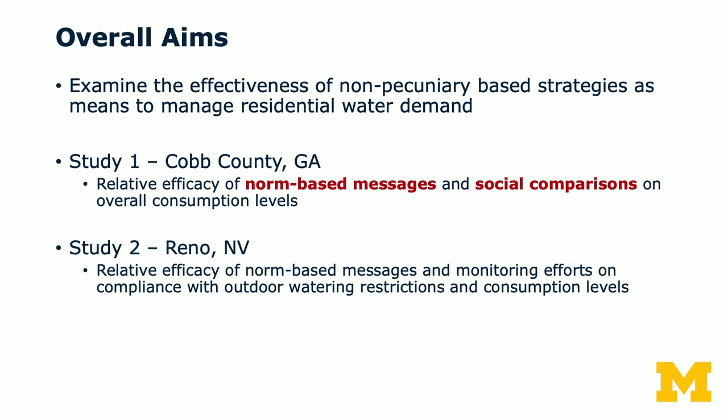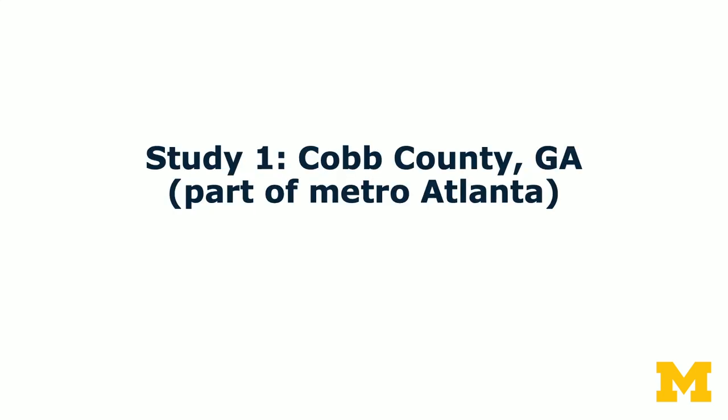The overall aim of the study is to examine the effectiveness of non-pecuniary-based strategies as means to manage residential water demand. They conducted two studies. The first one is conducted in Cobb County, Georgia. In this study, the authors compare the relative efficacy of norm-based messages and social comparisons on overall consumption levels. The researchers collaborated with Cobb County Water Systems, or CCWS, to distribute treated surface water to approximately 170,000 customers.